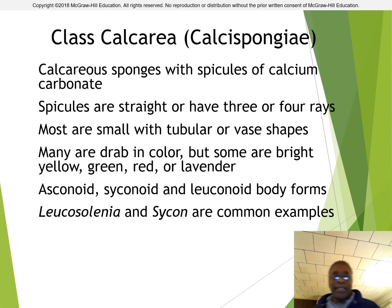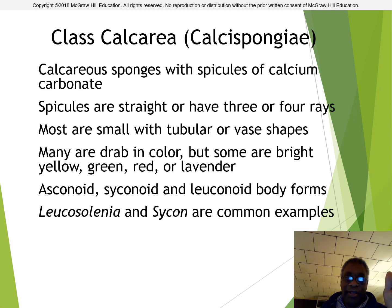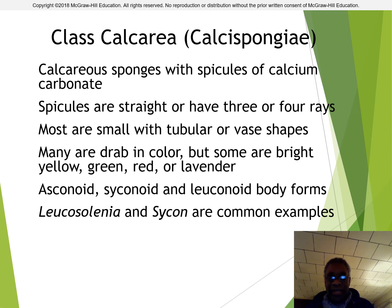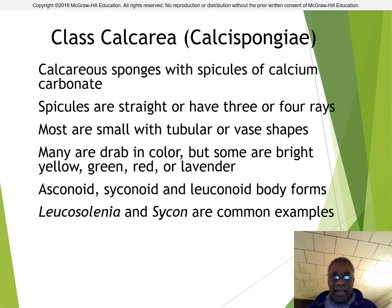Calcarea sponges have spicules of calcium carbonate, also known as Calcispongiae. The spicules tend to be pretty straight and have maybe three or four rays. Most of them tend to be small sponges with tubular or vase shapes. They can have different types of body forms — asconoid, syconoid, or leuconoid. Good examples are Leucosolenia and Sycon, which are common examples.